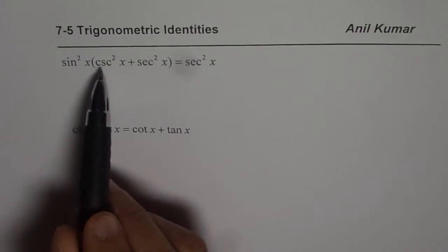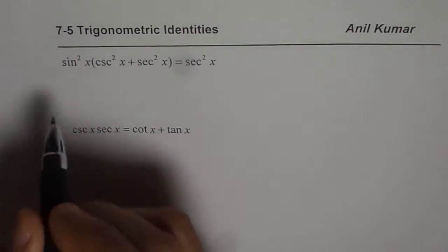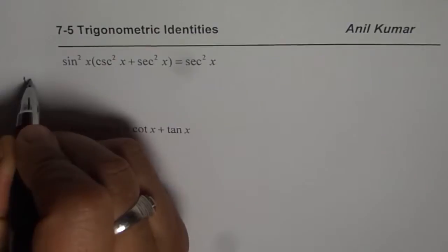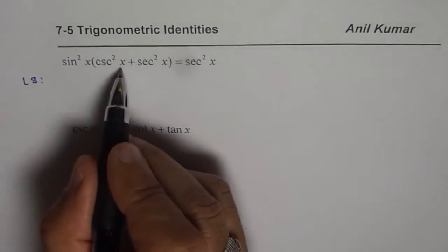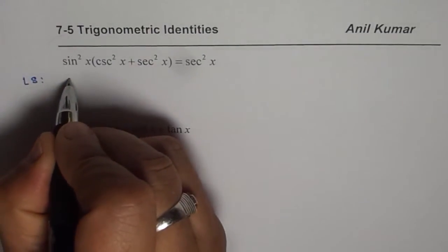It is sin²x times cosecant square x plus secant square x. Let's start with the left side as that seems to be more complicated. We will write cosecant and secant in terms of sine and cosine.